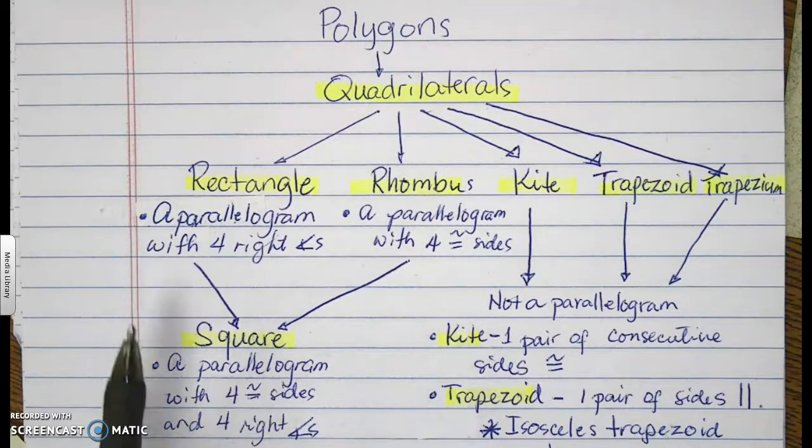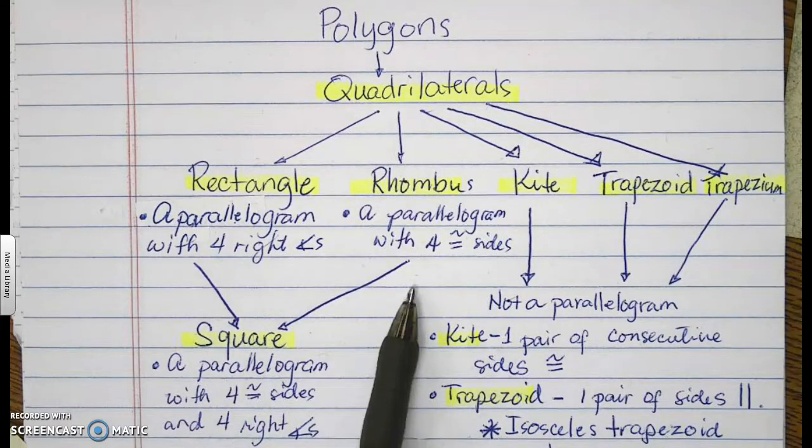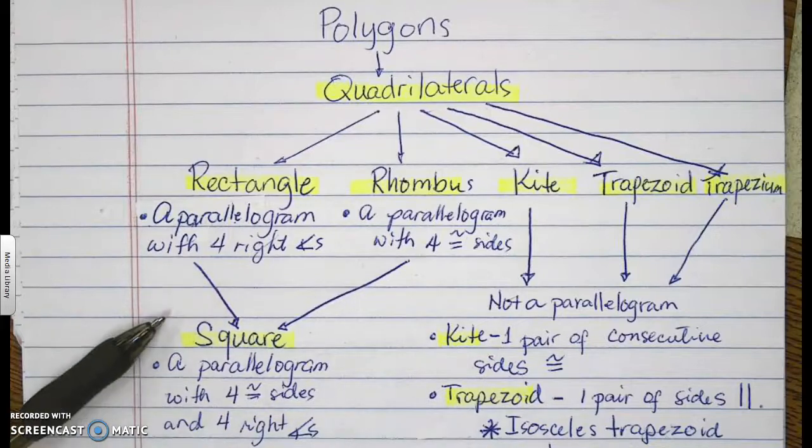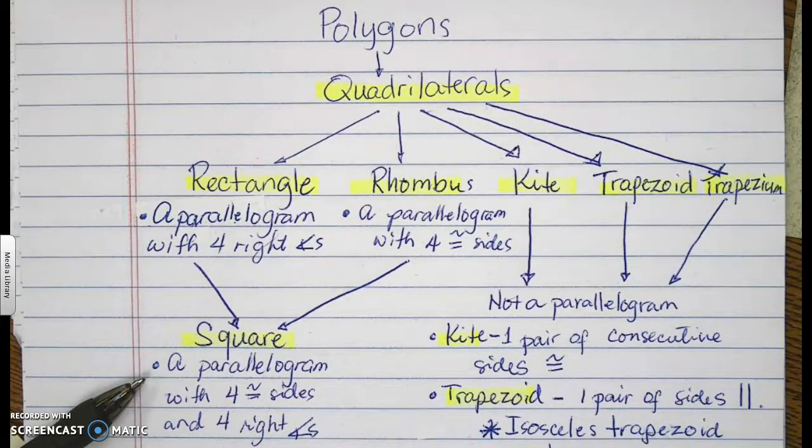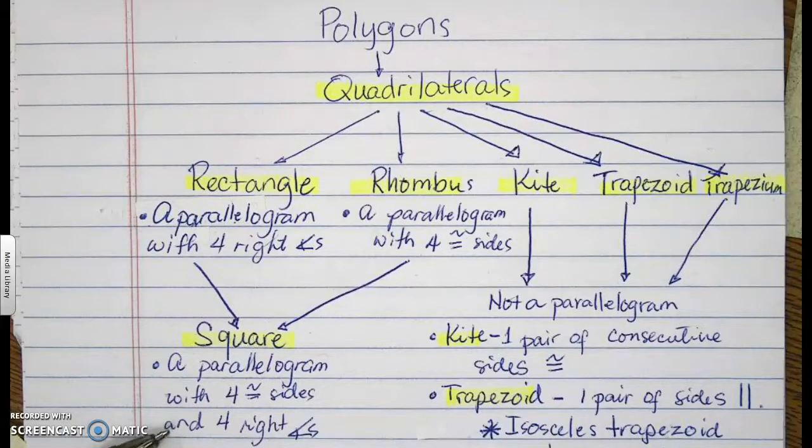Under the two is a special parallelogram called a square. A square is both rectangle and rhombus because of its characteristics. A square is a parallelogram with four congruent sides and four right angles, making it become a rhombus and a rectangle at the same time.